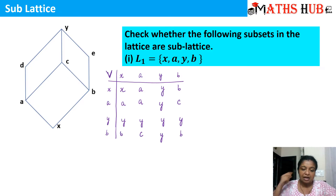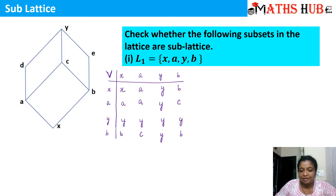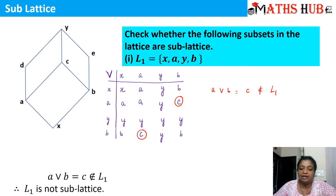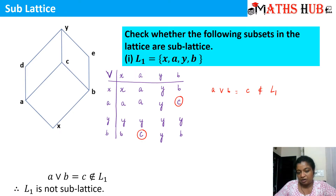Now we need to check that whatever elements we are getting in this join table all belong to L1. Unfortunately, you can see the element c present in the table — c does not belong to L1. So a join b equals c, but c does not belong to L1. Therefore L1 is not a sub-lattice. If all elements had belonged to L1, we would have moved on to the meet table to complete that check.